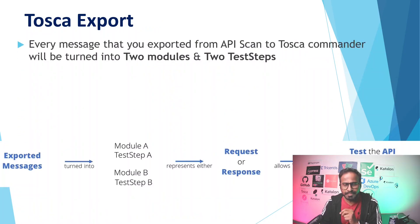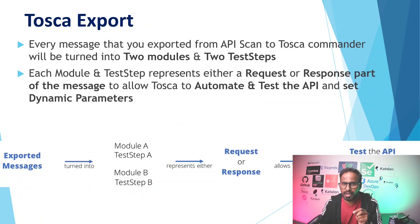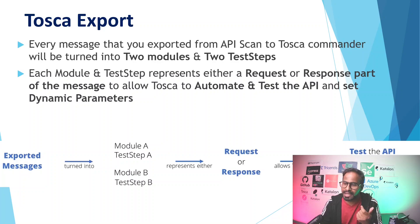Whenever you export any API result, every message that you export from API scan to Tosca commander will return into two modules and two test steps. Each module and test step represents either the request or response part of the message, allowing Tosca to automate and test the API and set dynamic parameters. So whenever you export your API scan results to Tosca, it creates modules and test steps representing either request or response.